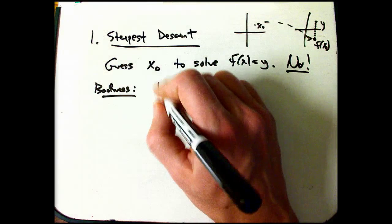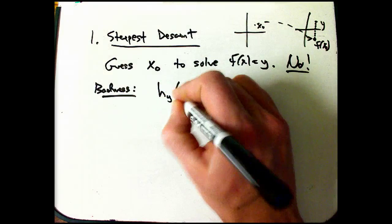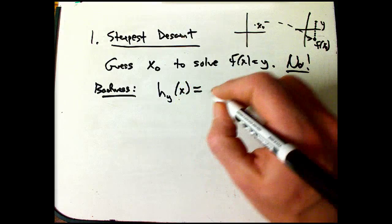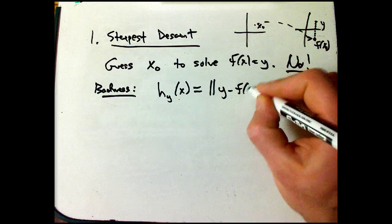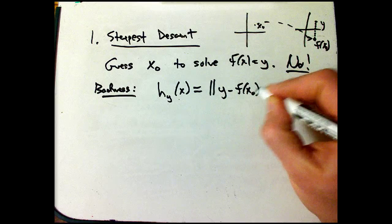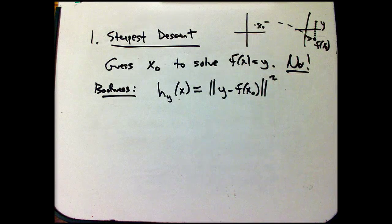Let's call it h sub y of x. We're going to use the magnitude squared of the difference between these guys.